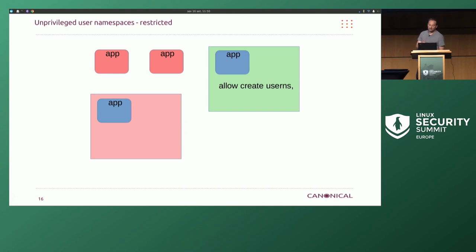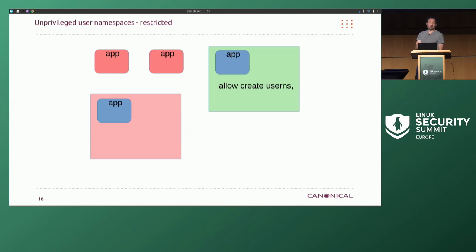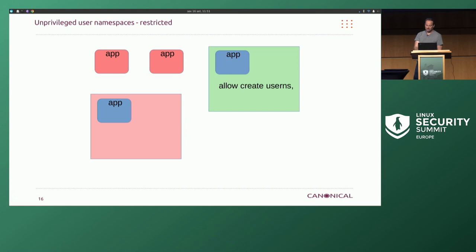The idea is: if you're a privileged process, you get access — it's not a problem. It's only the unprivileged access that's a problem. And then you have to be confined. So if you know AppArmor, 'unconfined' doesn't usually have any restrictions, but it will. You won't be able to use unprivileged user namespaces unconfined. You'll have to have some kind of confinement around you — and it can be really loose, an empty profile that says 'allow everything' essentially, and gives it unprivileged user namespace access. We'll have extra sysctl for AppArmor controls on this so it can be disabled.